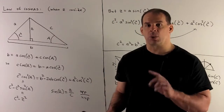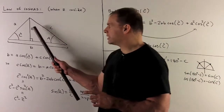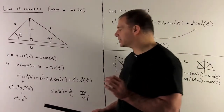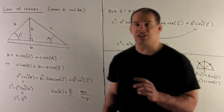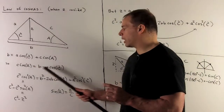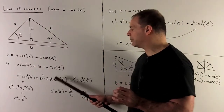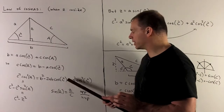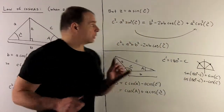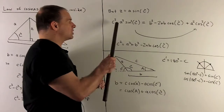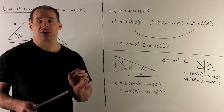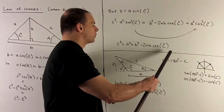Now we want to get rid of z squared too, so we look at the other triangle where z equals a times the sine of c. Substituting, the left-hand side becomes c squared minus a squared sine squared c. On the right-hand side, squaring gives b squared minus 2ab cosine c plus a squared cosine squared c. Putting everything together and pushing the a squared sine squared c to the other side, we get c squared equals a squared plus b squared minus 2ab cosine of c — that's the law of cosines.